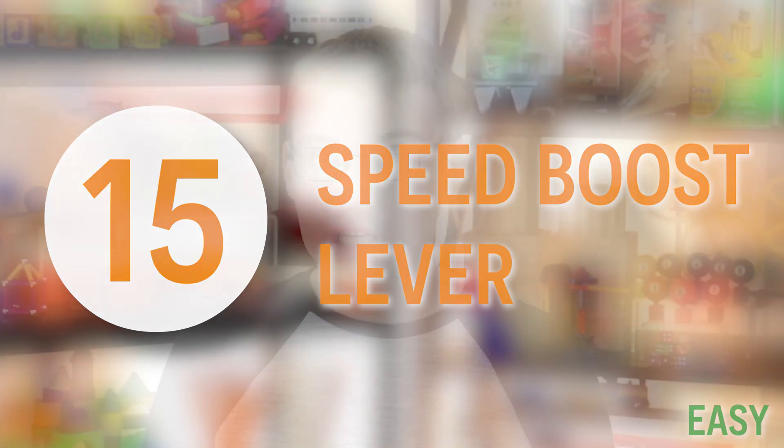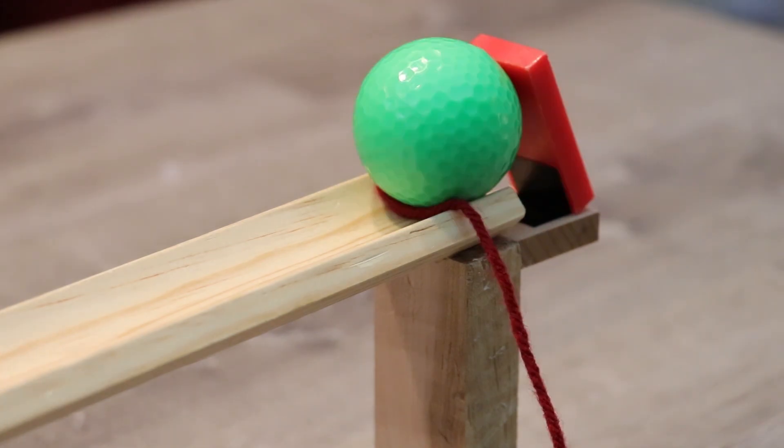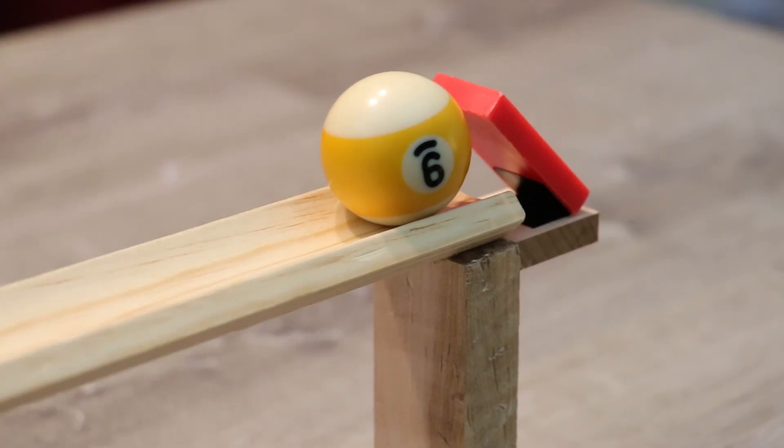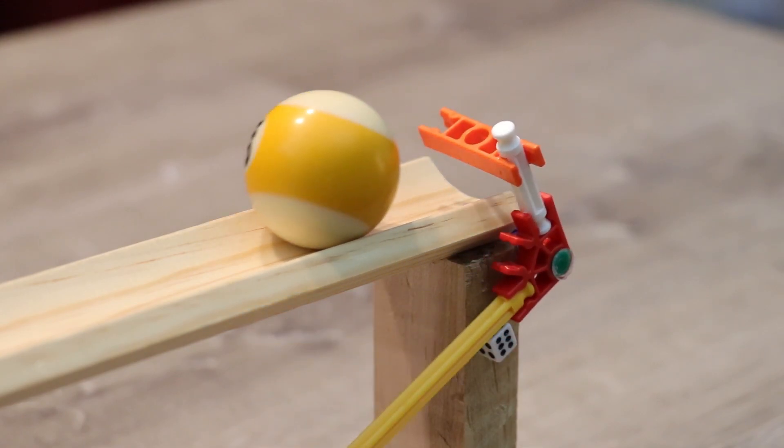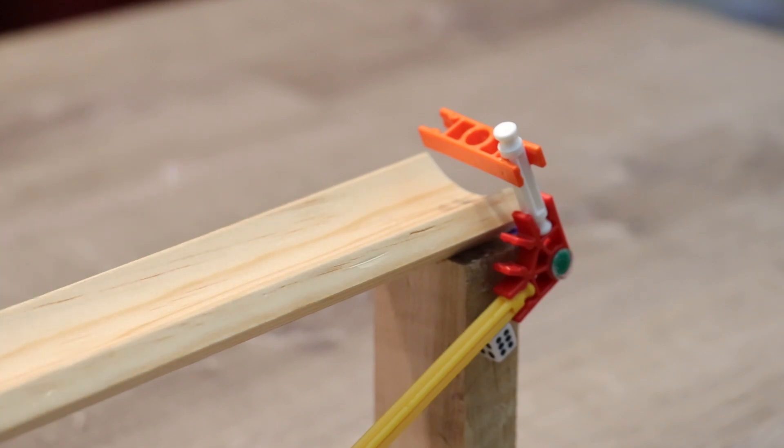In episode one, we talked about how a pre-toppled domino could be leaned up against the side of a ball to make sure that it starts rolling. And this mechanism is a bit of a variant on that that opens up a couple more possibilities. For example, if you need to get a really heavy ball rolling on an unsloped track, this method isn't the greatest. And sure, maybe you could play around with the weight of the domino or the height of the domino, but a better alternative is the speed boost lever. And of course, the speed boost lever will also work for all of the applications that we talked about before.